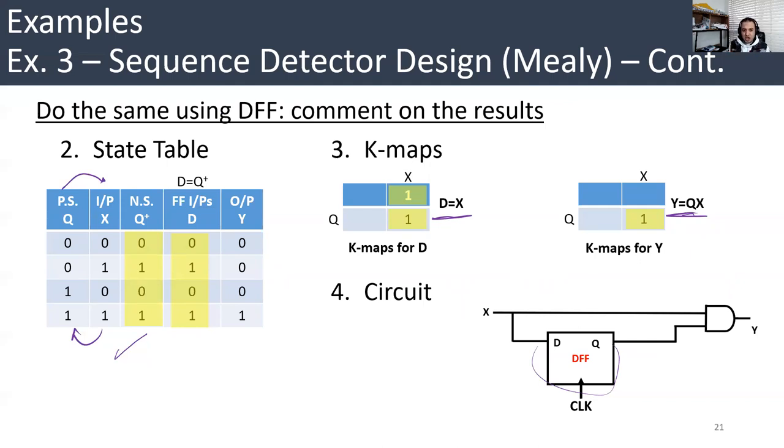So now we see that the change of the flip-flop type might affect the complexity of the circuit. Number two, we need to know now, what if we designed the same circuit using Moore concept or Moore approach in which the output does not depend on the input. Look, it's dependent here on the state and the input. So in Moore approach, this combinational logic has no input from the input, all its input come from the flip-flops.